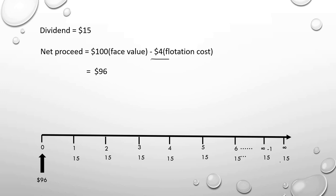The formula for irredeemable preference shares is: KP (cost of preference shares) = Dividend paid ÷ Net proceeds. Here, dividend paid is $15 and net proceeds is $96. So KP = 15 ÷ 96 = 0.1563, or 15.63%.